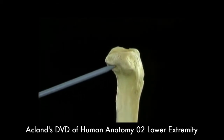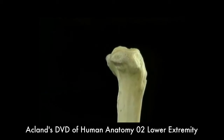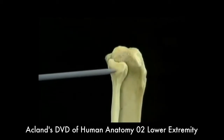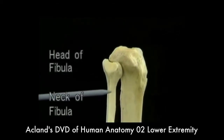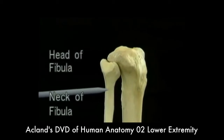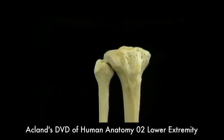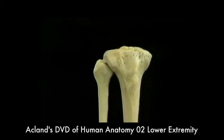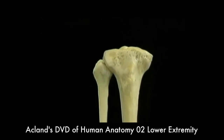The small facet under here is for the fibula. This is the head of the fibula. This is the neck. The head of the fibula is the point of attachment of a major ligament of the knee joint, as we'll see.